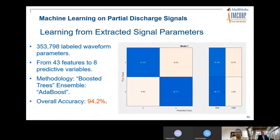The machine learning approach used a boosted tree methodology on a data pool of 353,000 labeled waveform parameters. The waveforms were labeled by human expert analysts using specific signal processing tools to classify partial discharge signals. Out of 43 extracted features, only 8 are necessary to achieve an overall accuracy of 94%. The goal is to find out how much closer to 100% is achievable.